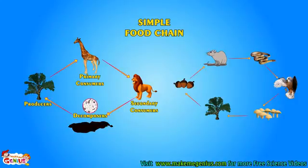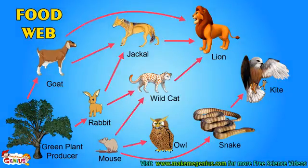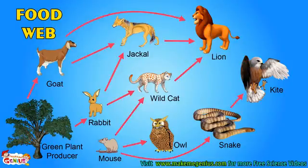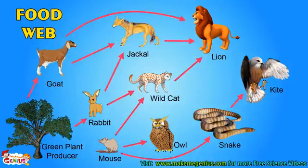Life is not so simple. Look at this picture — it is very complex. Look at the rat: it can be eaten by a cat, or it may be eaten by a snake. A plant can be eaten by a goat or by a rabbit. These kinds of complex food chains are called a food web, as they are very interconnected, like a spider web.